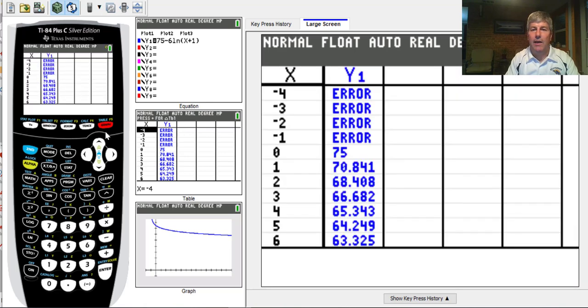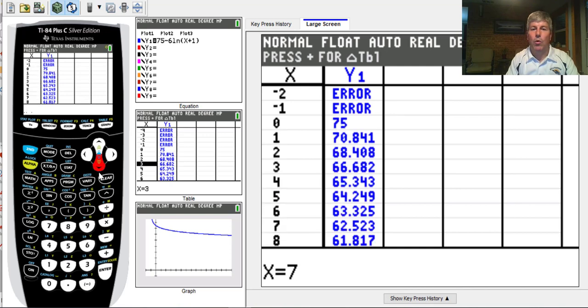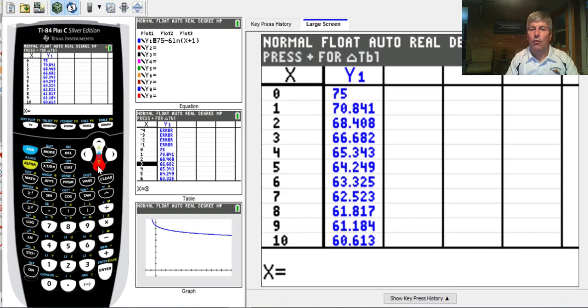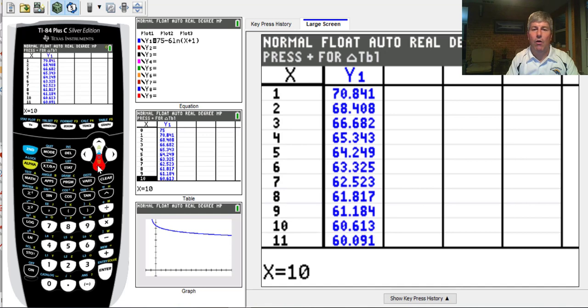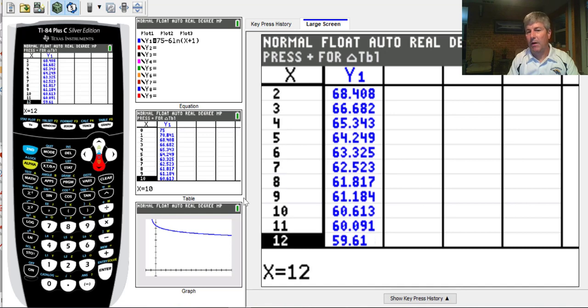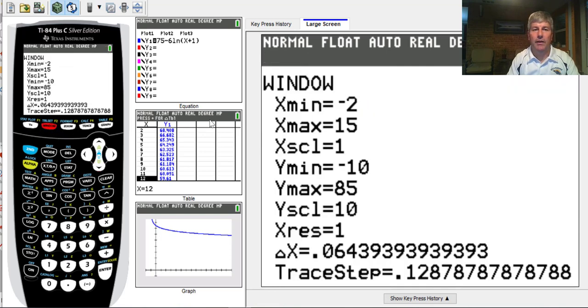We can go to our table, and we're not going to have negative x's, so I'm just going to cursor down a little bit. We can see our table gives us all the outputs for those 12 months. Our window really goes only until about 59 for x equals 12. So if I wanted a better looking graph, I could always tweak my window a little bit.